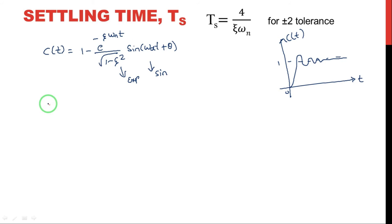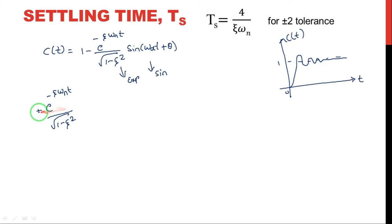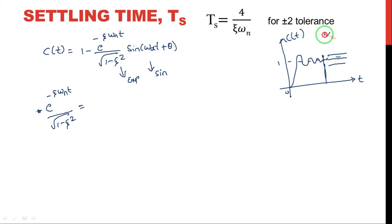We take the exponential component e^(−ζωₙt) / √(1−ζ²) as the main component. We equate this to the tolerance band. Settling time is defined with a bandwidth: plus or minus 2% tolerance or plus or minus 5% tolerance. For 2% bandwidth, we get one settling time formula; for 5% tolerance, we get another.